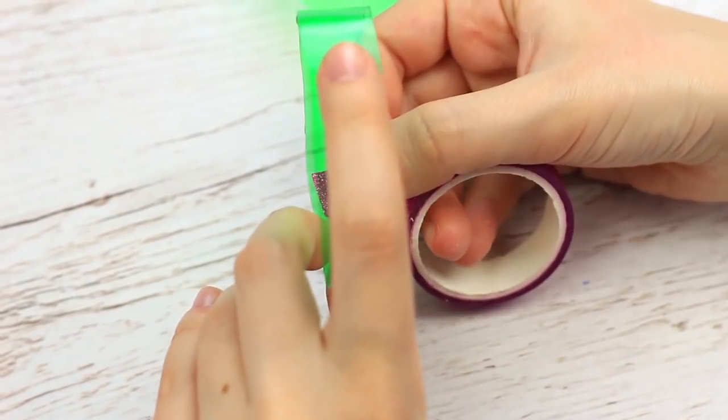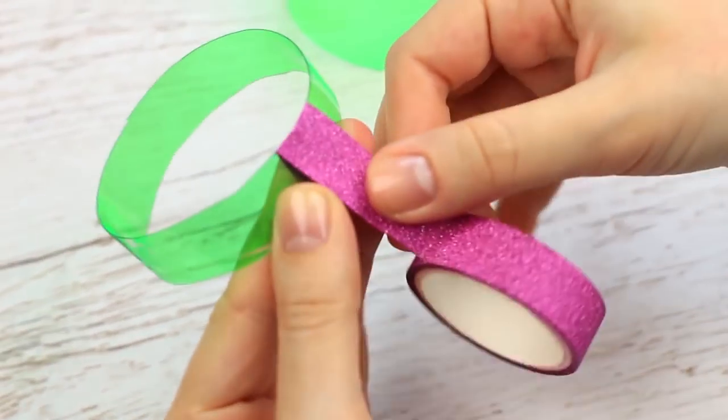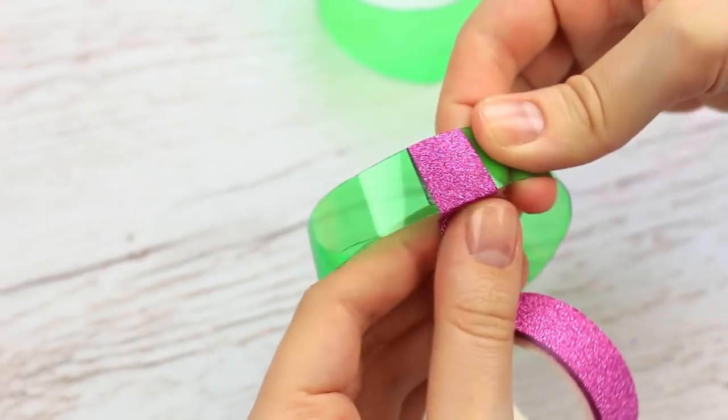Wrap decorative tape around the narrow one. We've chosen a bright lavender color with glitter.